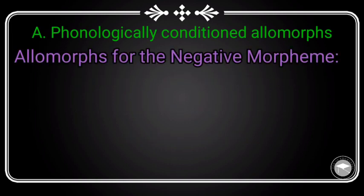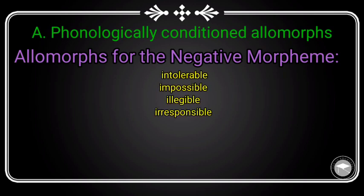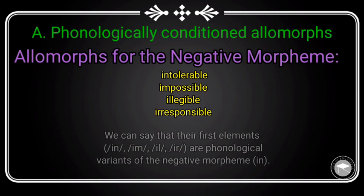واللي كيعطيوا الـ opposite ديال الكلمة. إلا لاحطوا هذ الكلمات: Intolerable، Impossible، Illegible، Irresponsible. هنا In، Im، Il، و Ir كلهم allomorphs ديال المورفيم In.